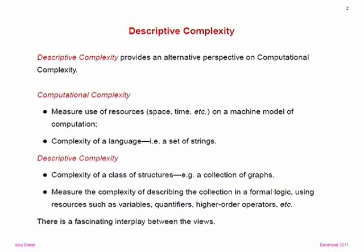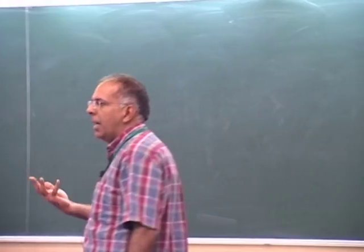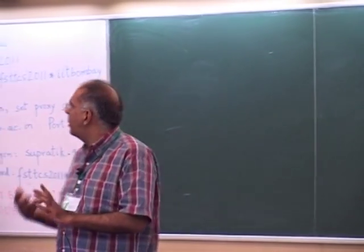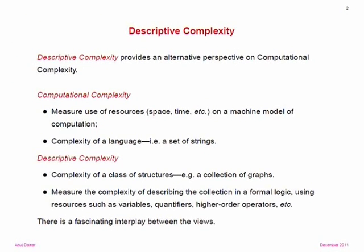We are talking about descriptive complexity. The way I look at it, descriptive complexity provides an alternative way of looking at computational complexity. Classically, complexity is about measuring the use of resources such as space, time, and so on, on some machine model of computation, and we typically define it as the complexity of a language — a set of strings — which is our classical notion of a decision problem.